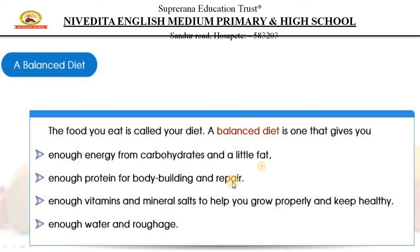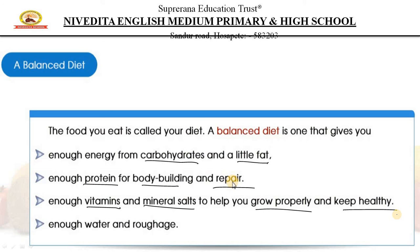We also saw something called a balanced diet at the start of the chapter. A balanced diet means: the food you eat should provide enough energy from carbohydrates and a little fat; enough proteins that help in body building and repair; enough vitamins and mineral salts to help you grow properly and stay healthy; and enough water and roughage. Planning your diet to include all these things is called a balanced diet.